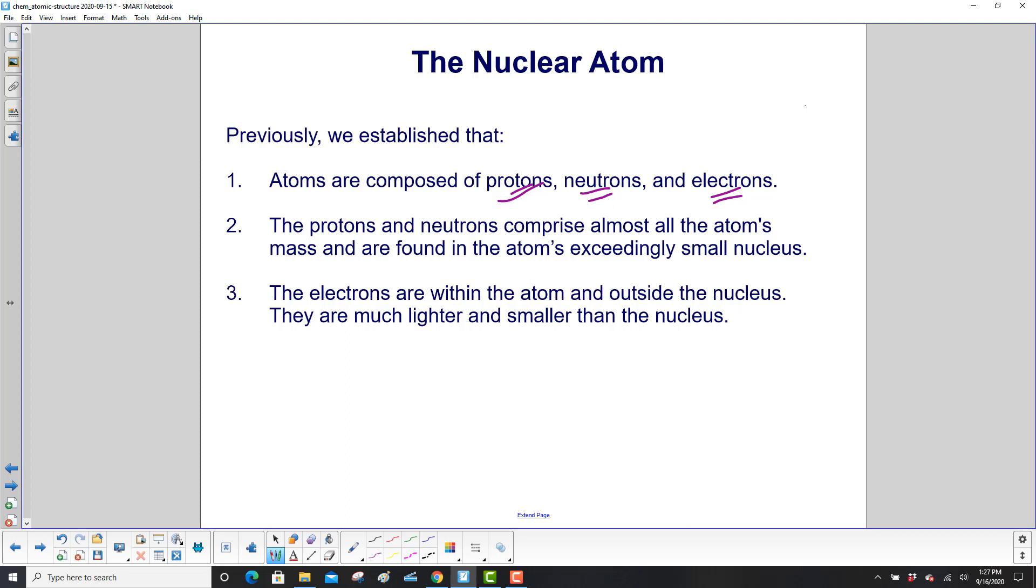The protons and neutrons comprise almost all the atom's mass and are found in the atom's exceedingly small nucleus. The electrons are within the atom but outside the nucleus. They are much lighter and smaller than the nucleus.